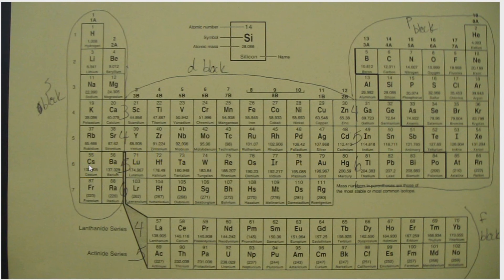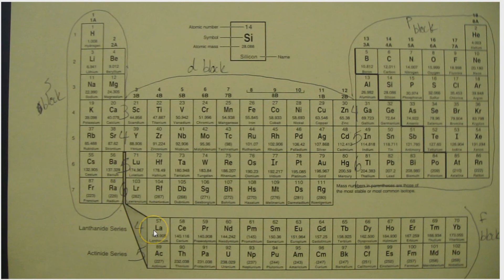It's going to get a little more complicated here. Cesium is 6s1, barium is 6s2. Now we come down to lanthanum — there's a four here, so this is 4f1, then 4f2, all the way down to ytterbium, which is 4f14.